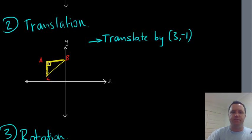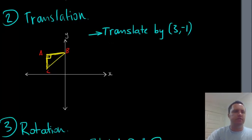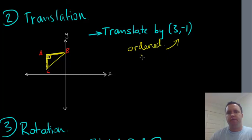Right, translation. So this is another one. This is where you actually move the shape. So we can translate this triangle here by a vector 3, negative 1. Now, this, as you should remember, is an ordered pair. So this corresponds to an x-coordinate, and this corresponds to a y-coordinate.